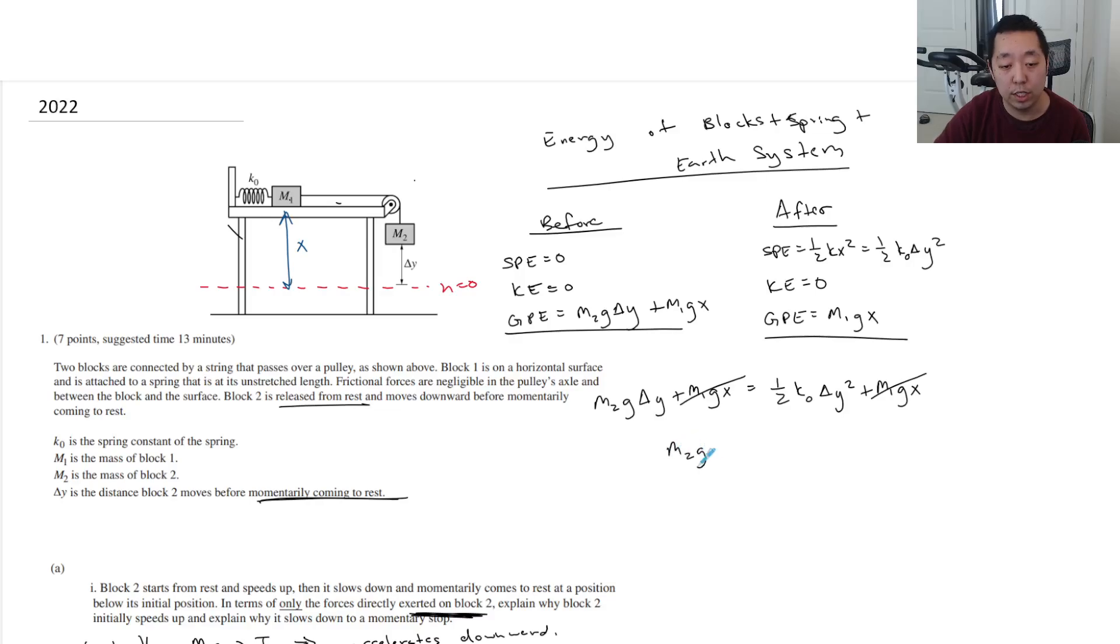And so you get M2G delta Y equals 1 half K0 delta Y squared. You can divide by delta Y because I know delta Y is not zero. So then delta Y is going to be 2 M2G over K0.